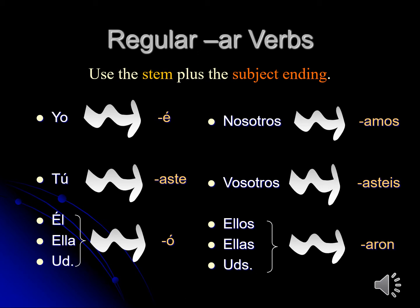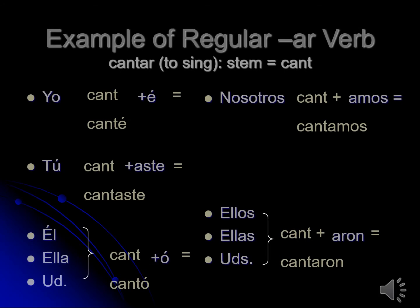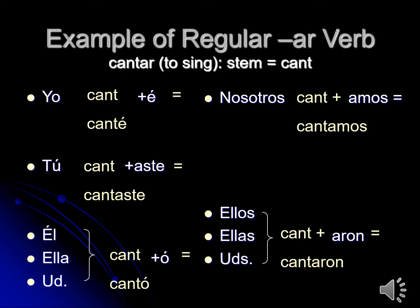The accent marks on the endings are very important. For example, the difference between hablo without an accent mark on the O and habló with an accent mark on the O is the difference between 'I speak' and 'he spoke.' Here's an example of a regular AR verb in the preterite. Cantar is a regular AR verb. We take the AR ending off and our stem is cant. When we add the preterite endings: yo canté, tú cantaste, él/ella/usted cantó, nosotros cantamos, and ellos/ellas/ustedes cantaron.